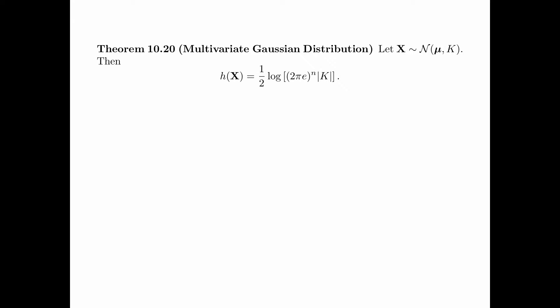Theorem 10.20 gives the formula for the differential entropy of a multivariate Gaussian distribution. Let the random vector x be jointly Gaussian with mean mu and covariance matrix K. Then the differential entropy of x is equal to one half times log of (2 pi e)^n times the determinant of K.